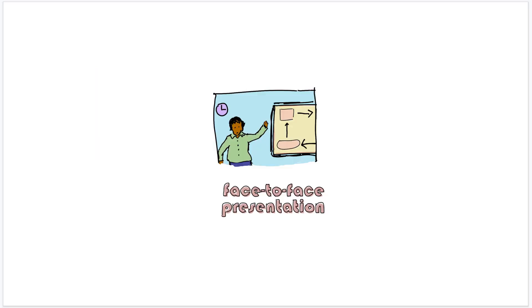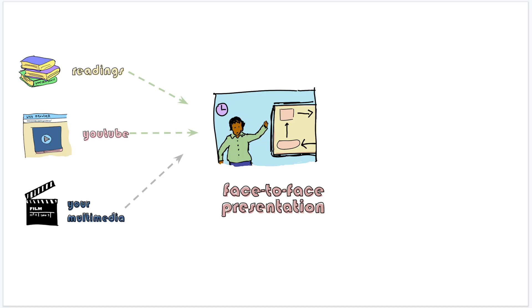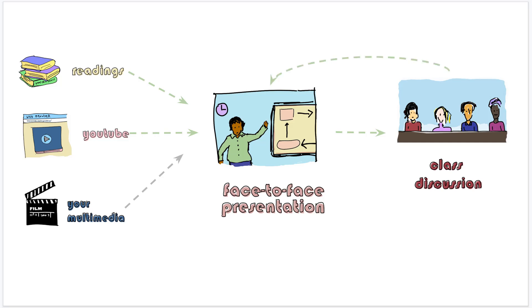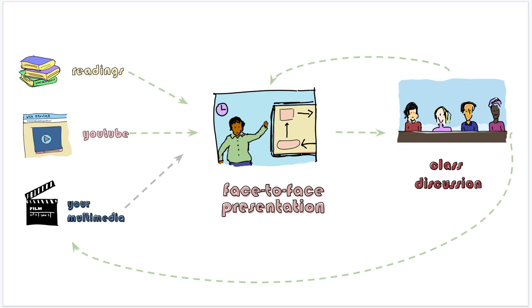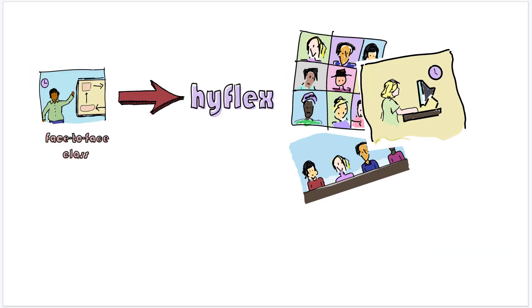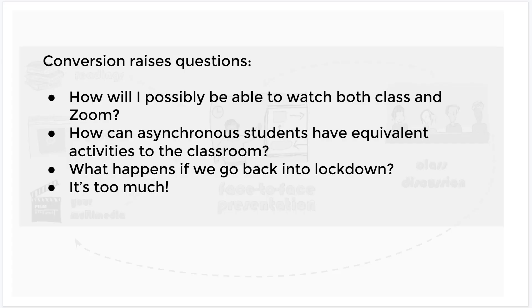Here's what I mean. So again, this is the perception: you've got this face-to-face presentation, students do a bunch of stuff before, they come to the face-to-face presentation, then you have a class discussion. Maybe you do presentation and discussion, have a rhythm — a little bit of presentation, a little bit of discussion, maybe some active learning. And the question faculty often ask is: how do I take this face-to-face class and include these other populations?